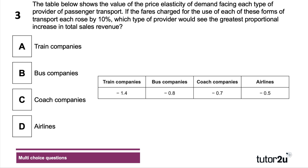Question three: the table shows the price elasticity of demand facing each type of passenger transport provider. If fares increase by 10% for each, which type of provider would see the greatest proportional increase in their revenue? The answer is airlines, because they have the lowest price elasticity of demand.